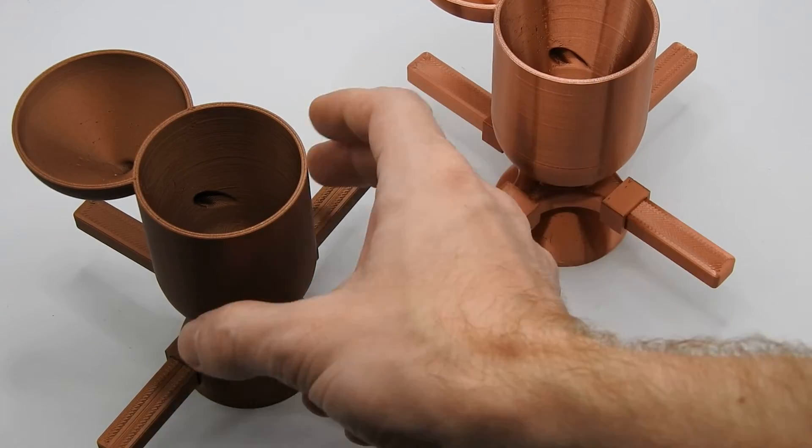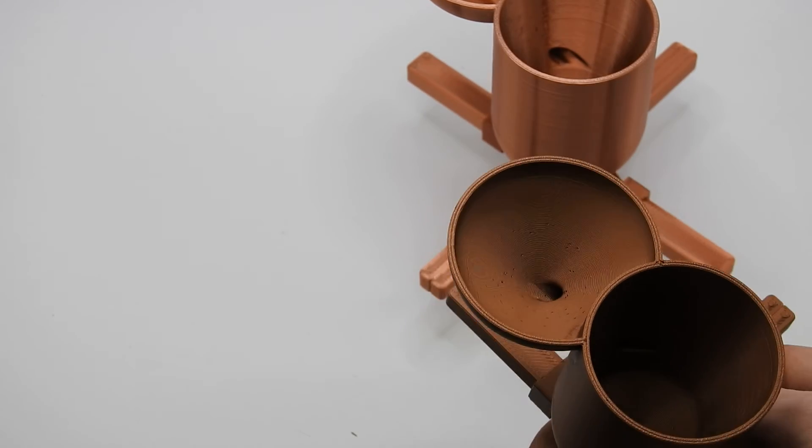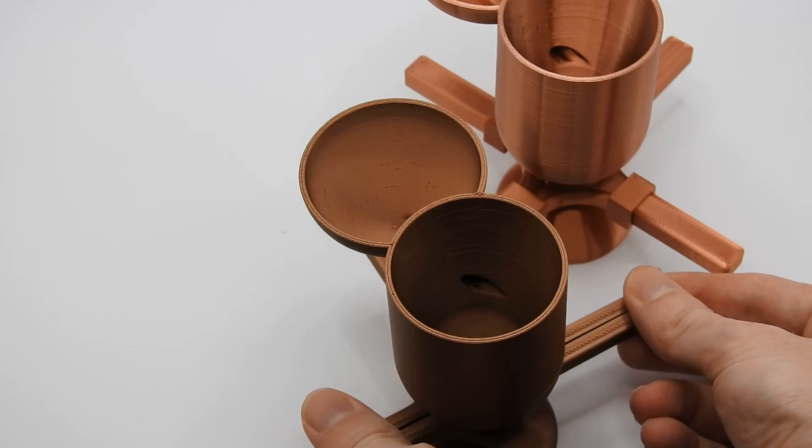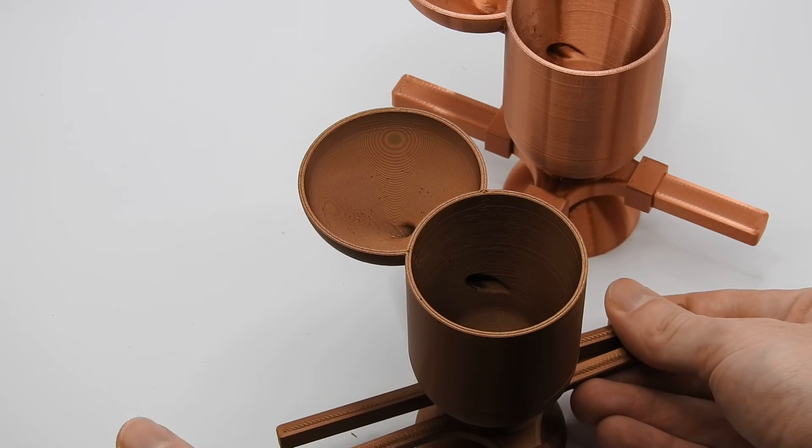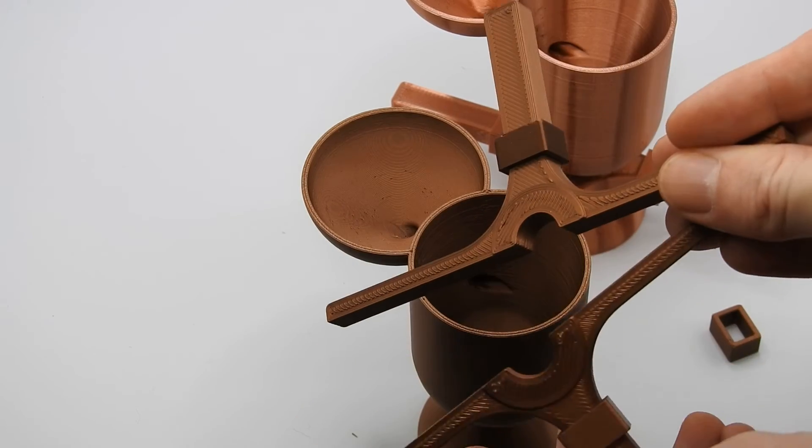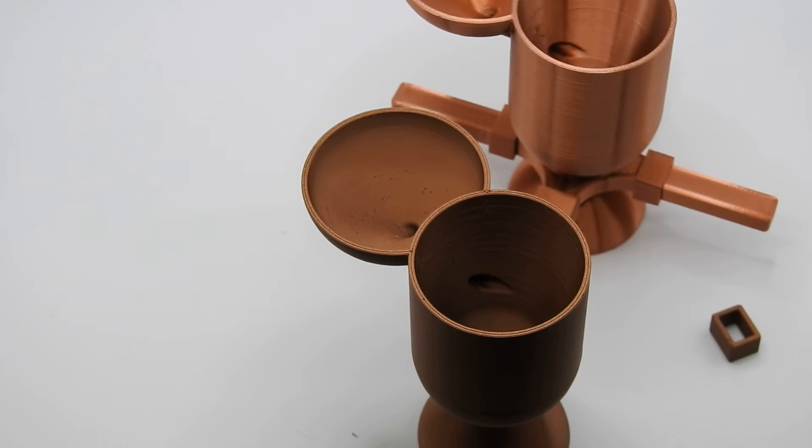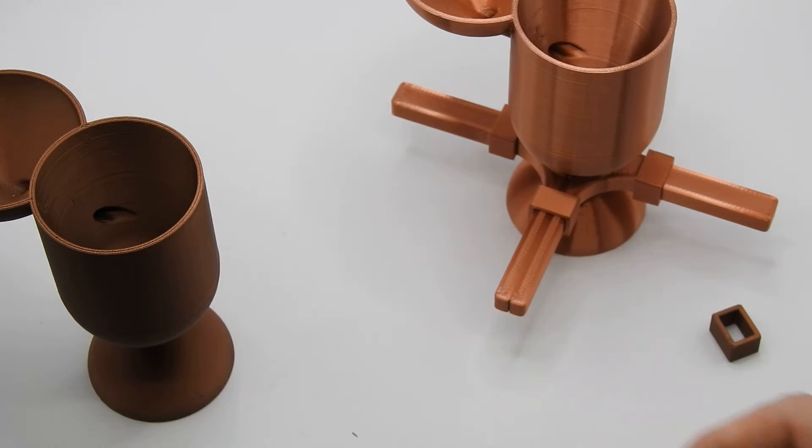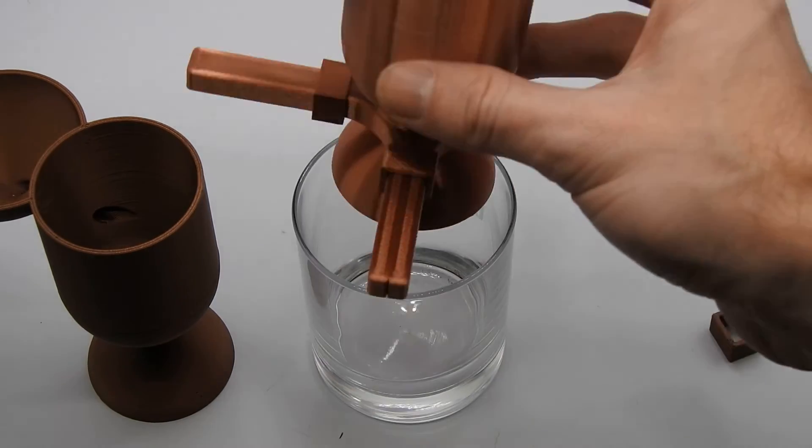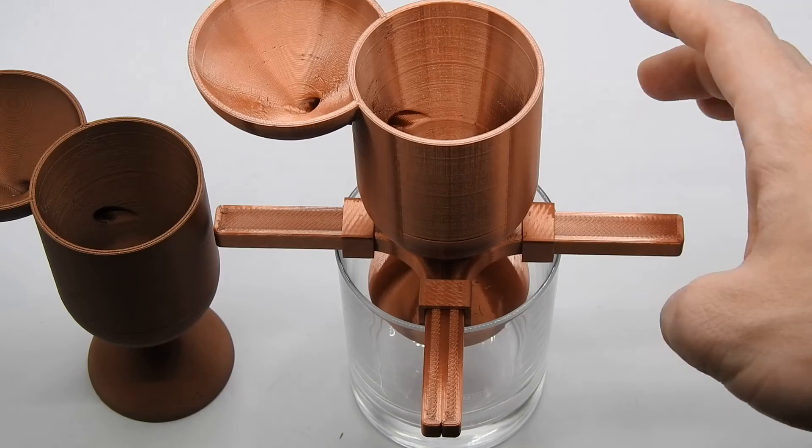And what you've probably already seen are these extensions here, and these are just to be able to put it on a glass of water. So as you can see, this can just be removed like this with this clip-on, and you can use it or you don't use it. But basically what it's made for is if you take a glass of water like this, you can just take the device and put it on there like this.